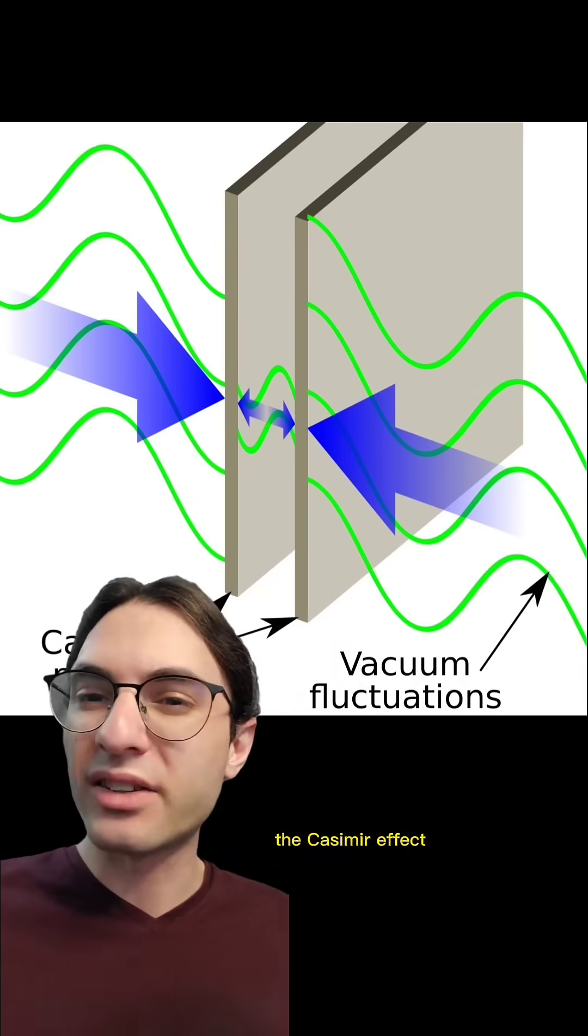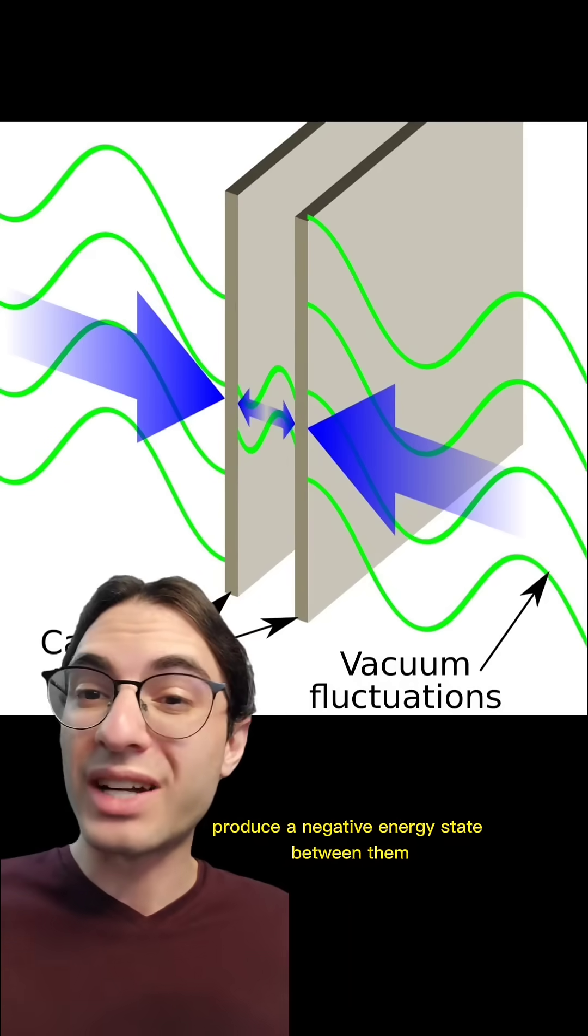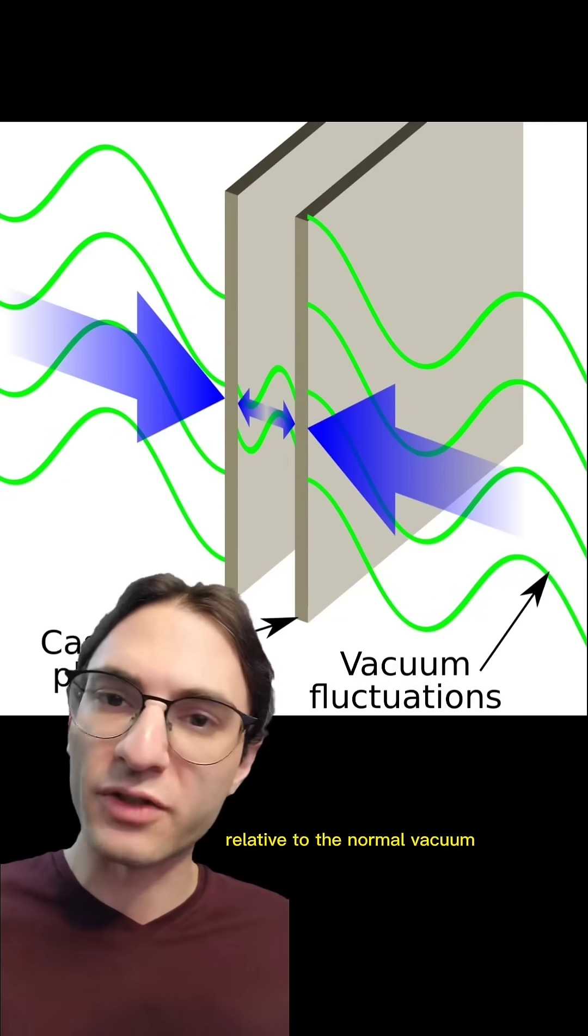For those of you who don't know, the Casimir effect is a now experimentally verified phenomenon wherein two parallel electrically conducting plates produce a negative energy state between them relative to the normal vacuum.